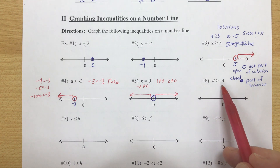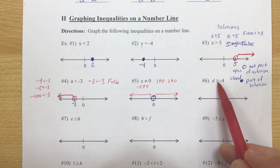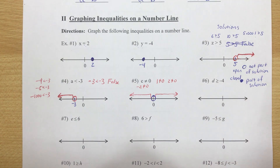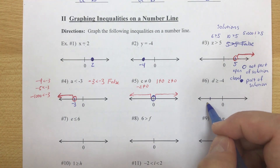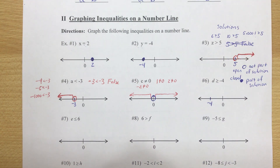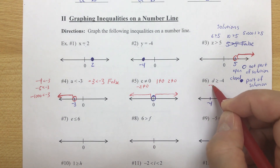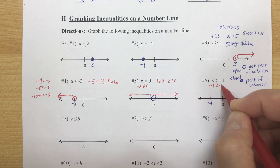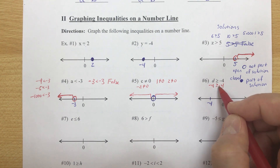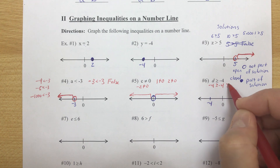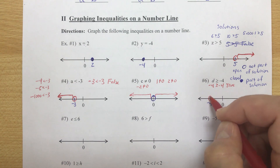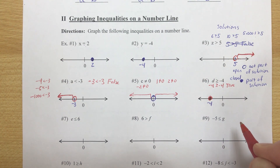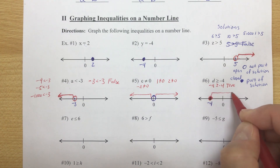Number 6: d is greater than or equal to negative 4. Negative 4 is to the left of 0. If I substitute negative 4 for d, is negative 4 greater than or equal to itself? Yes — that's true because we have the 'equal to' part. So this is a closed circle. We include negative 4 as part of the answer, and 'greater than or equal to' means the arrow goes to the right.